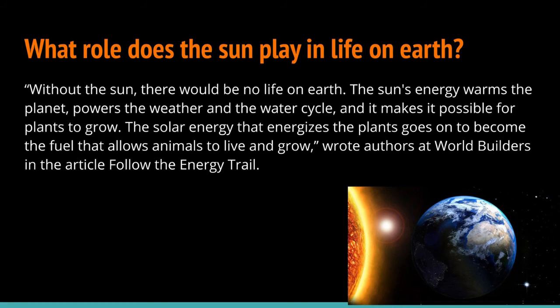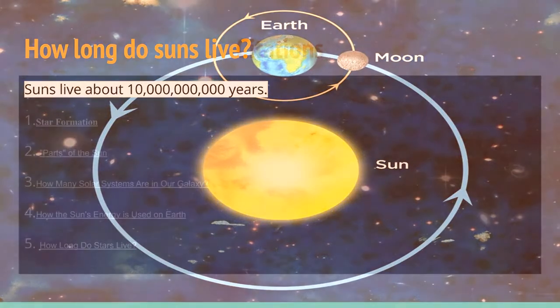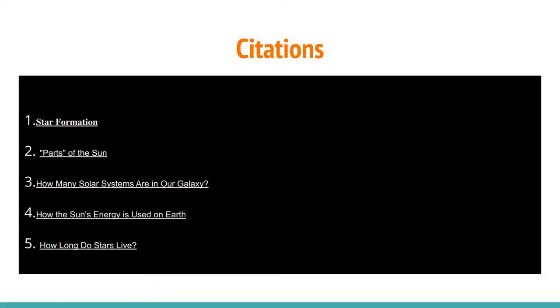How long do Suns live? Suns live for about 10 billion years. These are my citations.